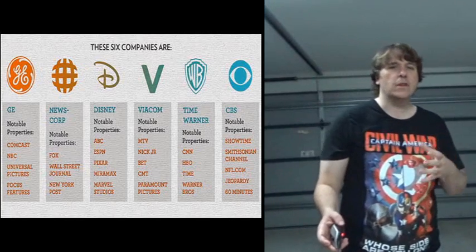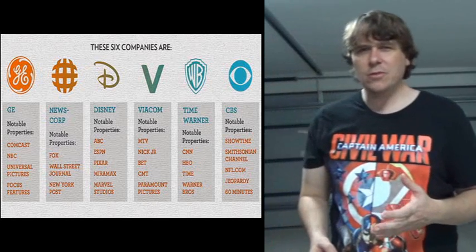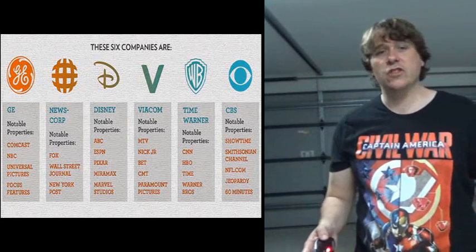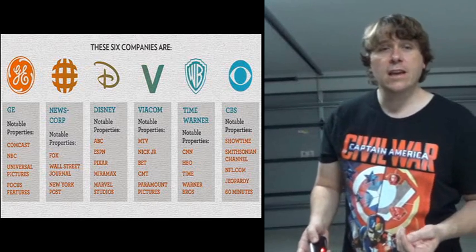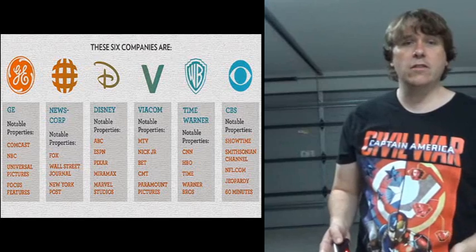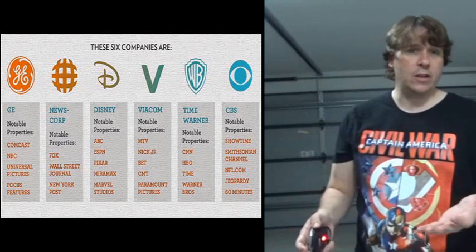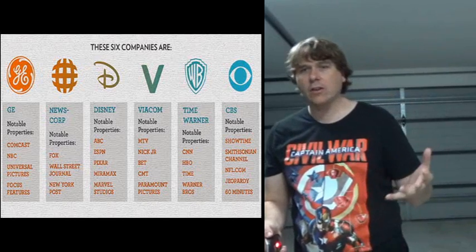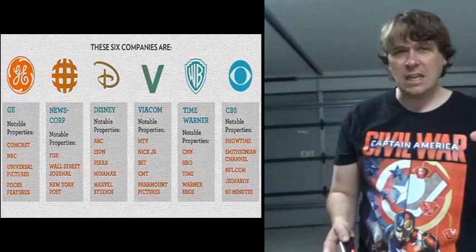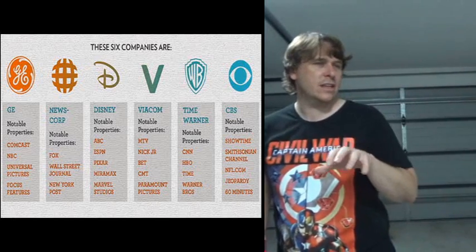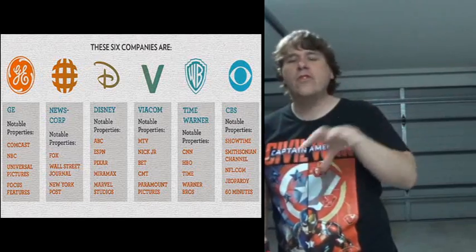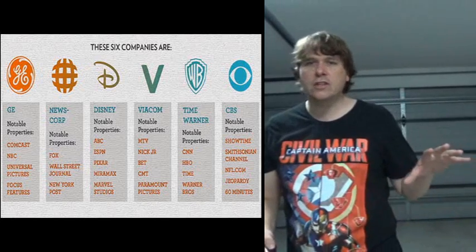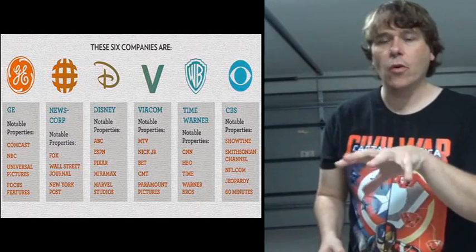Looking at other companies — especially within media — it really comes down to about six companies. You've got News Corp with Fox, Wall Street Journal, and New York Post; Disney with ABC, ESPN, Pixar, and Marvel Studios; Viacom with MTV and Paramount Pictures; Time Warner with CNN, Warner Brothers; and CBS with Showtime, NFL.com, Jeopardy, and 60 Minutes. Those six companies pretty much control everything, creating the illusion of competition when in reality they are controlling all those aspects.